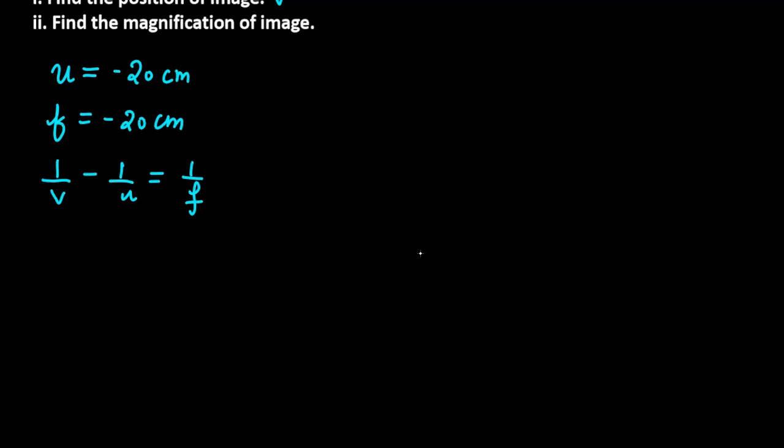V is unknown. u is minus 20, f is minus 20. Finally, substituting the values: 1 by v plus 1 by 20 is equal to minus 1 by 20.